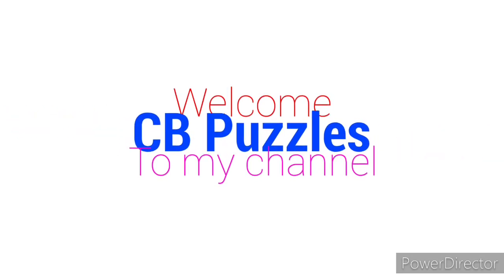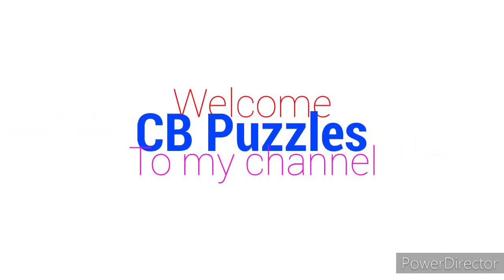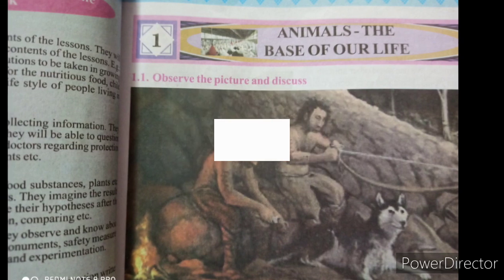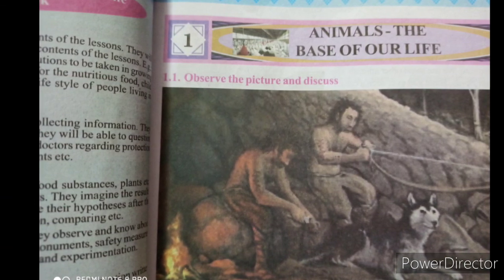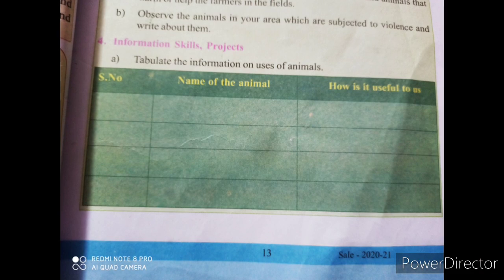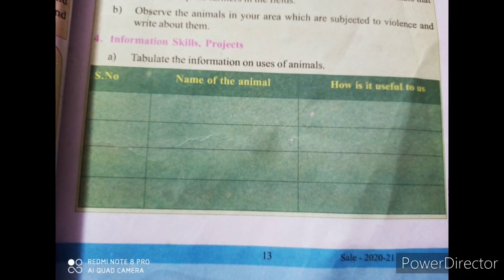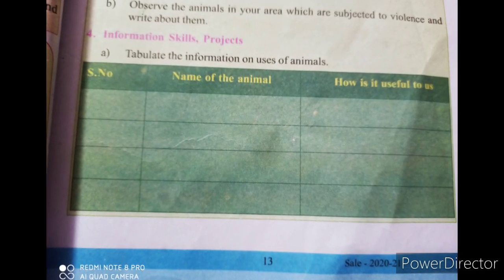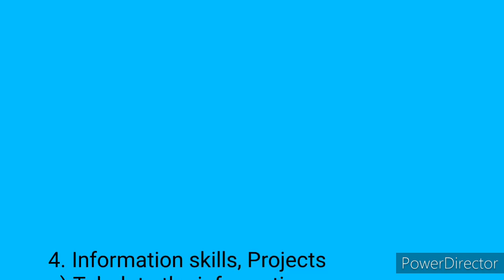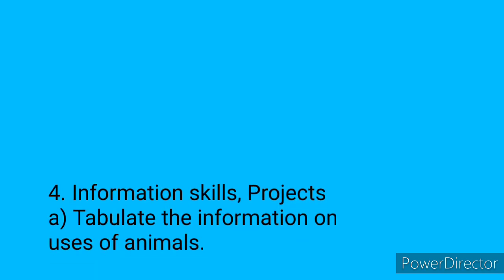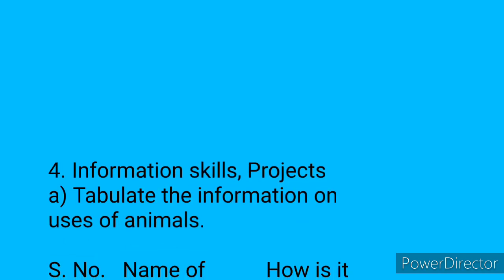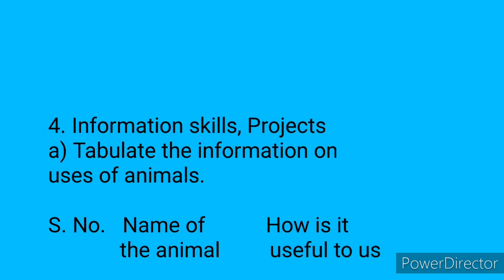Hi kids, today we are going to see fifth class EBS first lesson question answers. The lesson is 'Animals: The Base of Life,' page number 13, fourth question — information skills projects. We need to tabulate the information on uses of animals.